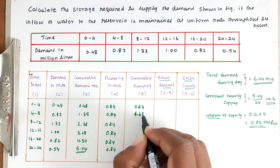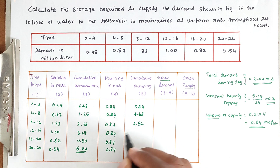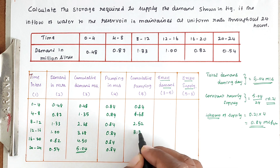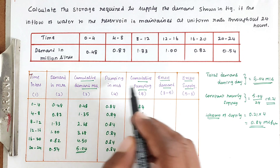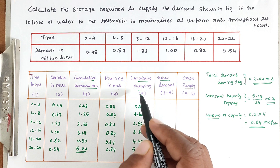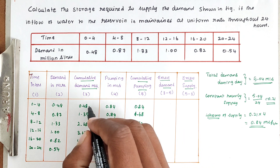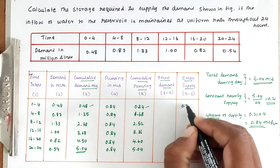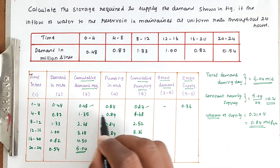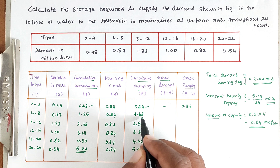The cumulative pumping values are: 0.84, 1.68, 2.52, 3.36, 4.40, 5.04 million liters. Now we find excess supply or excess demand. In the first interval, required is 0.48 but we send 0.84 — that is excess supply of 0.36. Next, cumulative demand is 1.35 but cumulative pumping is 1.68 — that is excess supply of 0.33.